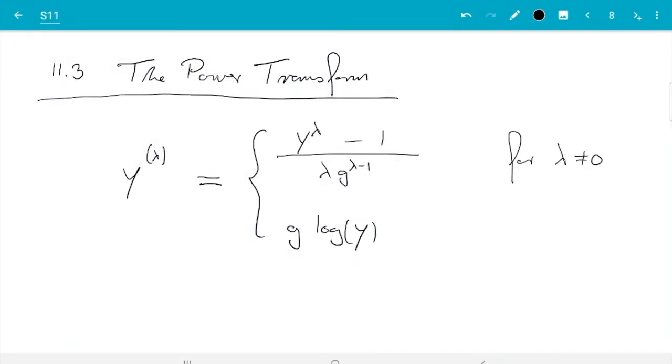First I need to explain what is g. g is the geometric mean of the y. That is the product from i equals 1 to n of y_i, and then the nth root of this. The nth root is only defined if this product is positive. This transformation is only used for positive y.